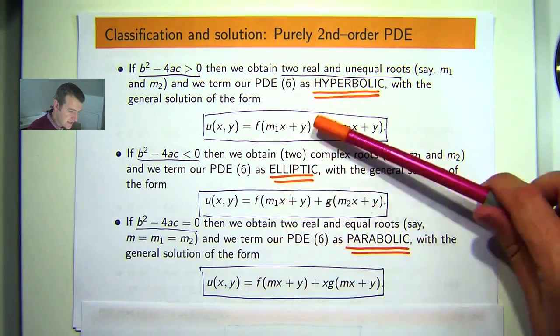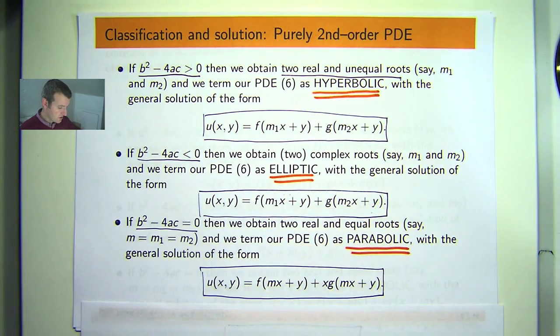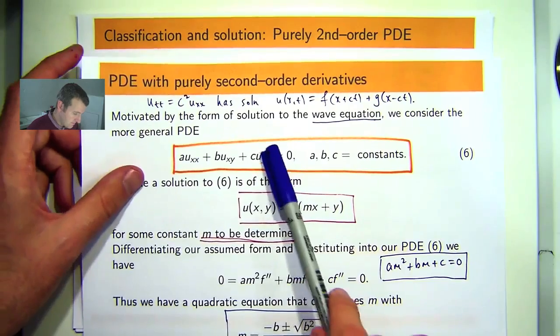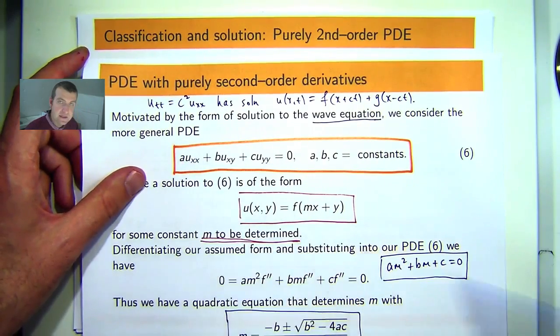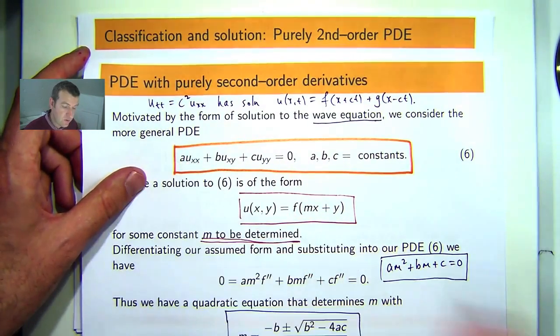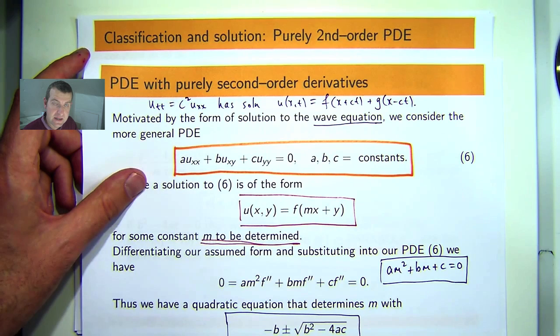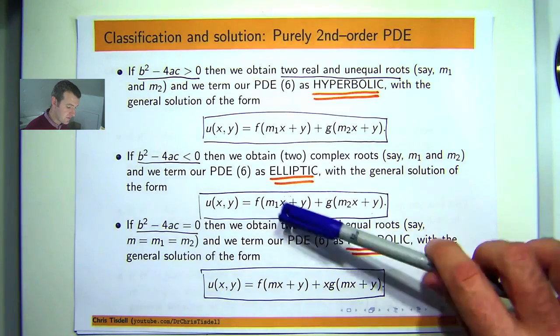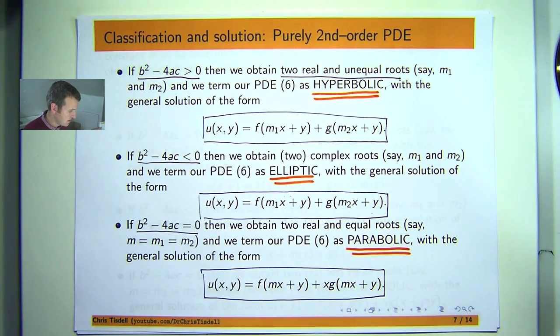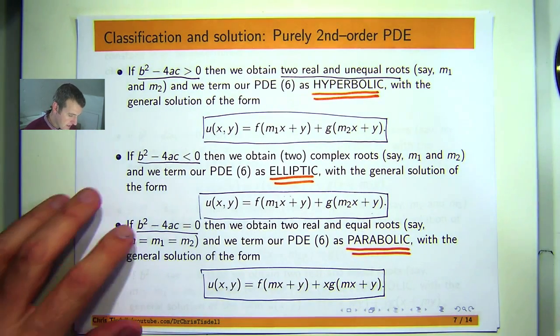Now if you want to justify each of these situations, what you can do is factor the PDE. So just like we did with the wave equation, we get two first-order PDEs and solve them. And you'll come up with each of these forms.